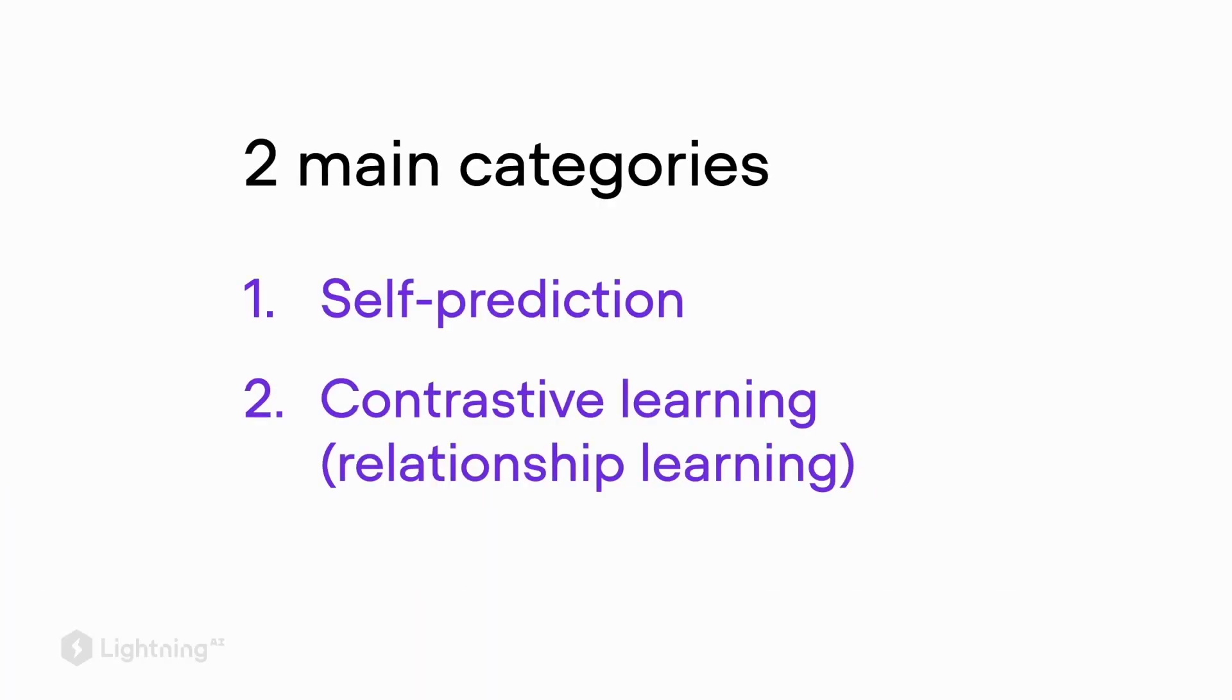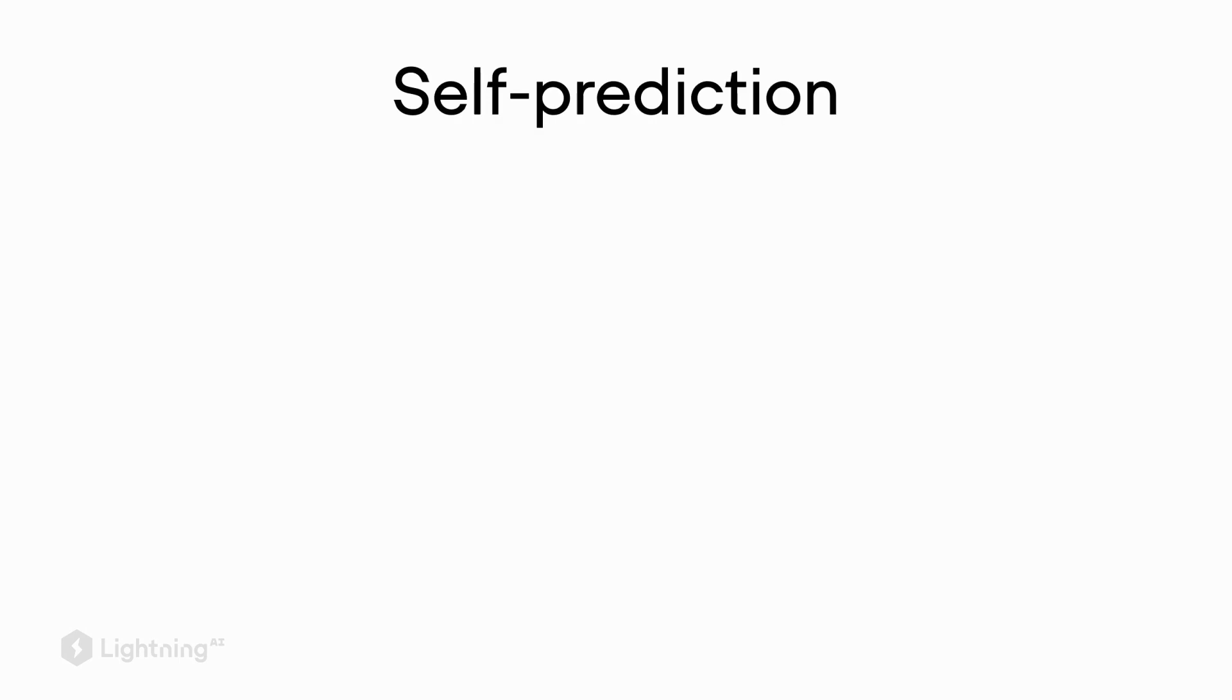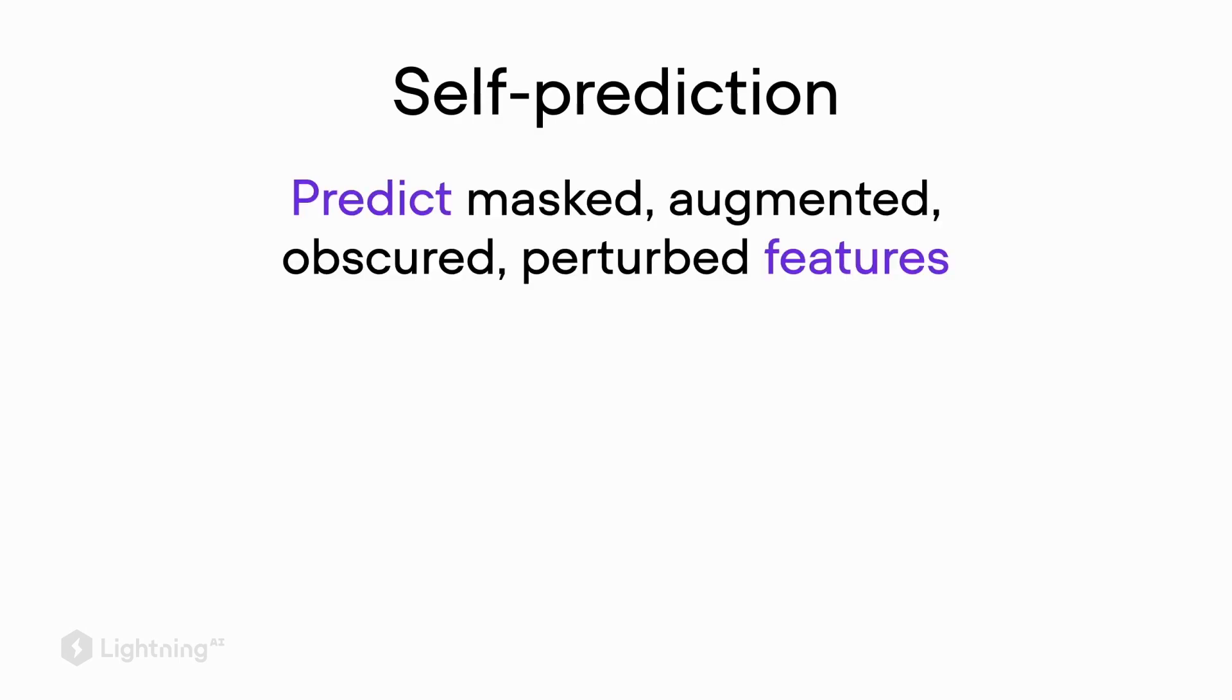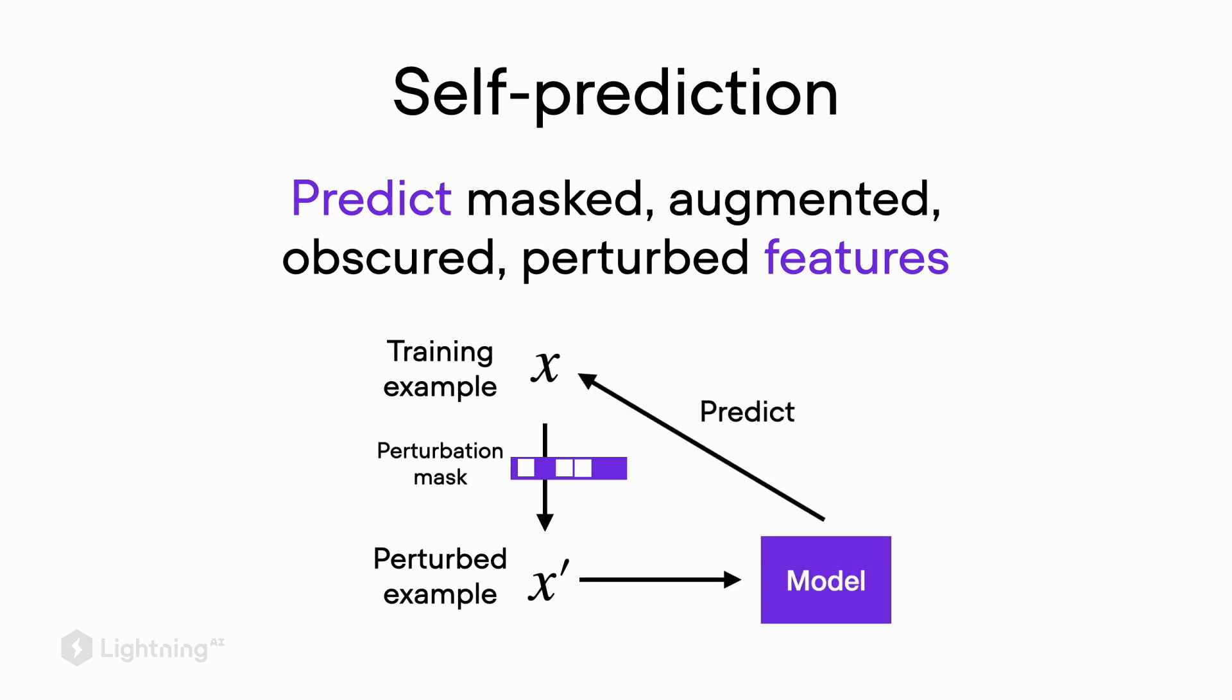Let's talk about self-prediction first. In self-prediction, we design a task where we predict masked features. You can think of these masked features as augmented, obscured, or perturbed features. Suppose you have an input training example. You can then apply a perturbation mask and obtain this perturbed example. The self-supervised task here now is to predict the original training example from this perturbed example.